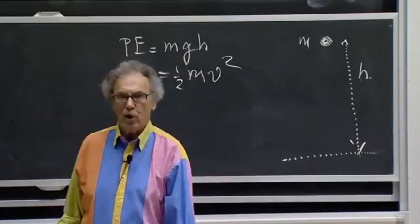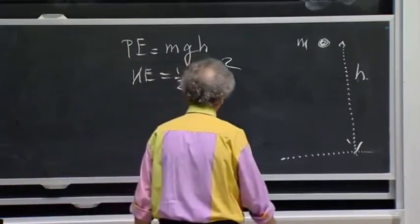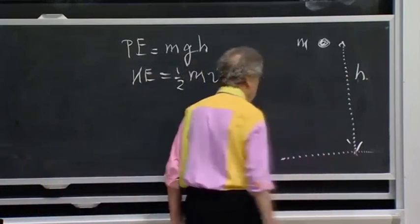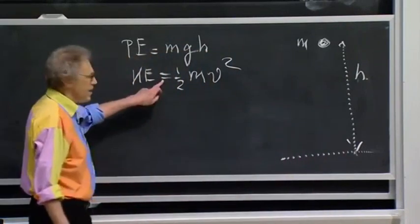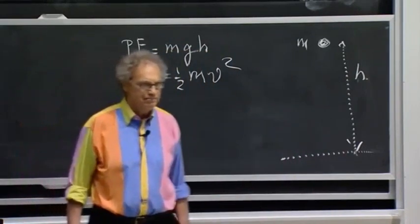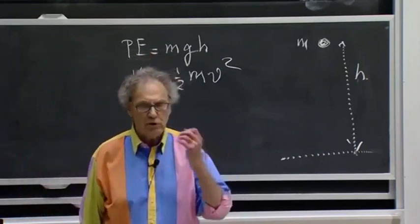If the object goes down and it hits the floor, then the potential energy is zero and all that energy is now converted to kinetic energy. Because energy, we believe, is conserved.